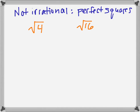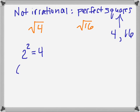Here are two examples of square roots which are not irrational. The reason is that the numbers inside — 4 and 16 — are called perfect squares. These are perfect squares because we can write them as the squares of some other number. So 2 squared is 4 — we could also think of this as negative 2 times negative 2. And 4 squared equals 16. So these are not irrational numbers, which means we can actually find the square roots of these.